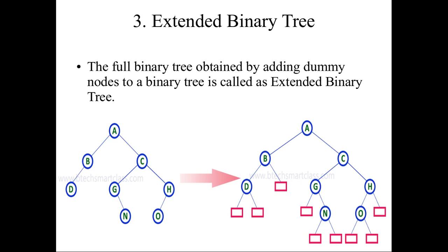Next is the extended binary tree. An extended binary tree is obtained by adding dummy nodes to a binary tree. Here is one such binary tree, and for this tree we are creating dummy variables to make it a strictly binary tree.